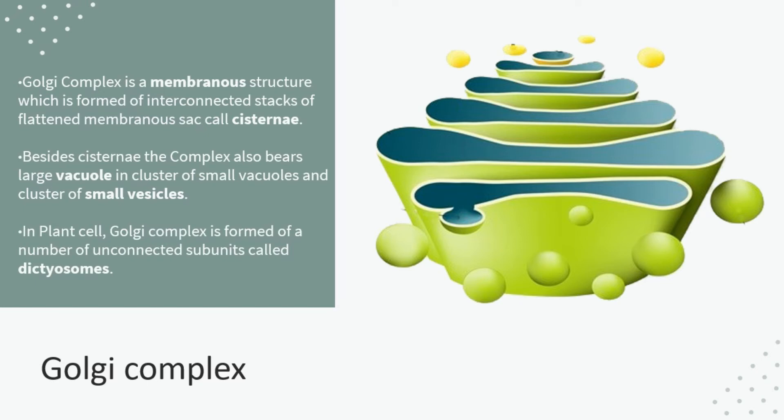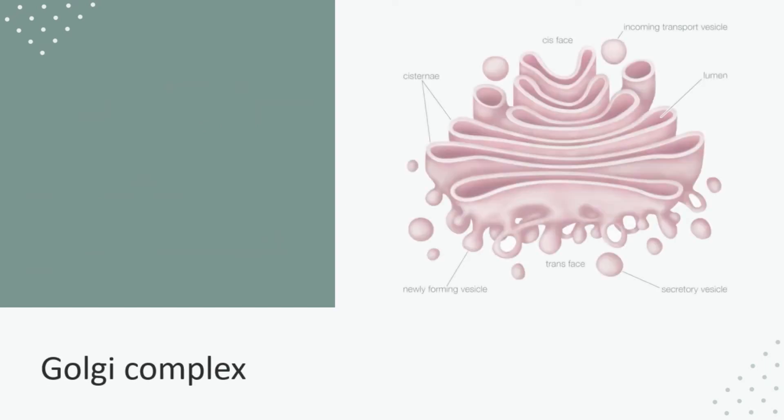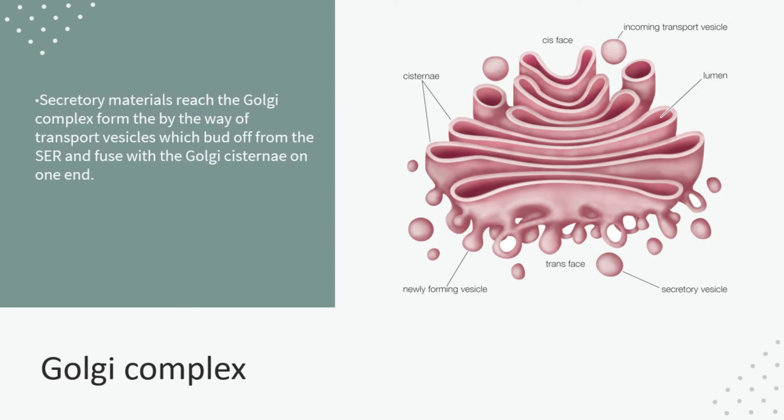In plant cells, the Golgi complex consists of unconnected sub-units. In plant cells the Golgi complex is made of many sub-units. We can see in this figure the incoming transport vesicles coming into the Golgi apparatus.